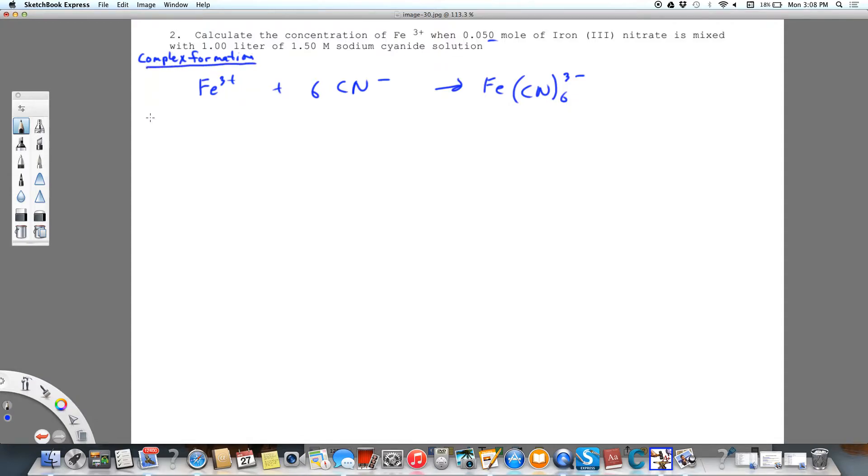We're going to have before the reaction, we're going to assume we've got a, then our change, we're going to assume we have a limiting reagent, which is going to be iron-3, and then after the reaction.